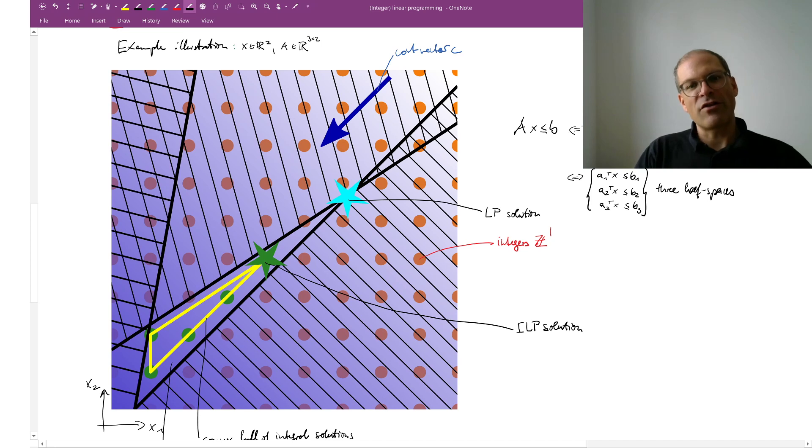If I'm now trying to minimize the cost vector over this feasible polytope, well the solution is that corner of the polytope which is closest to the upper right corner of the image, and that's the LP solution, the solution to the linear program.